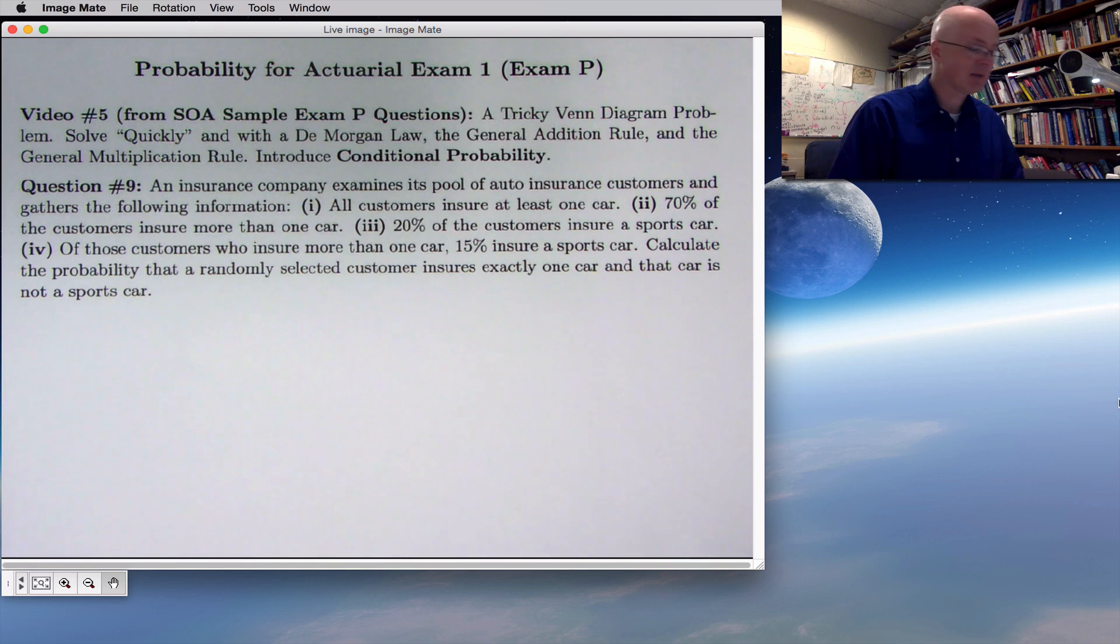We're continuing with the Venn diagram problem in this video. I'm calling it a tricky Venn diagram problem because it involves a new concept called conditional probability, which is definitely kind of tricky. We'll first solve the problem as quick as possible, and that's the way you'll want to do it when you take the exam. Secondly, we'll take a step back and talk about using probability formulas to solve the problem, in this case the De Morgan law and the general addition rule that we talked about in video number 4, and also a new rule called the general multiplication rule. I'm not going to completely justify these things, we're just going to see that they work. And I'm introducing this idea of conditional probability. And at the end of the video, we'll emphasize the importance of thinking in terms of areas with Mathematica manipulate animation to help us understand what's going on here.